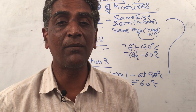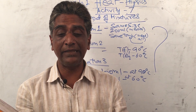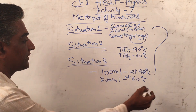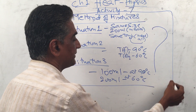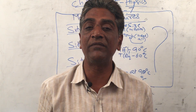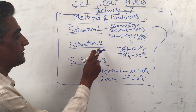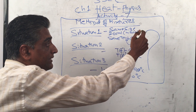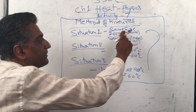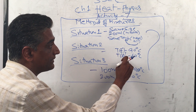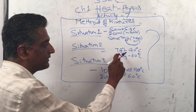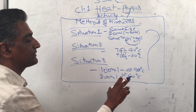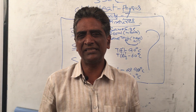What is the temperature of the mixture and what difference do you notice? To summarize: in situation one, both volumes were at the same temperature then mixed. In situation two, one was at 90°C and one at 60°C then mixed. In situation three, 100 ml at 90°C and 200 ml at 60°C were mixed. Simple enough.